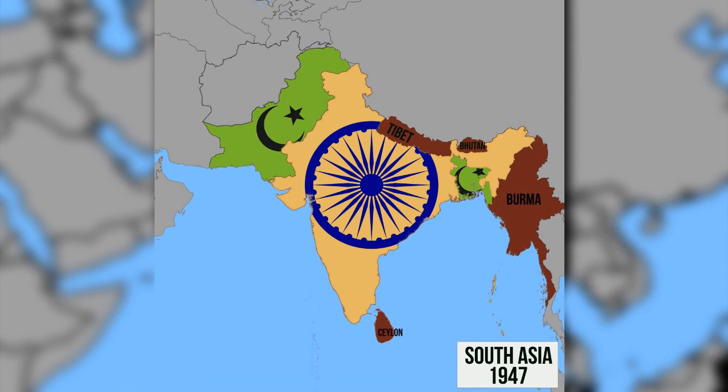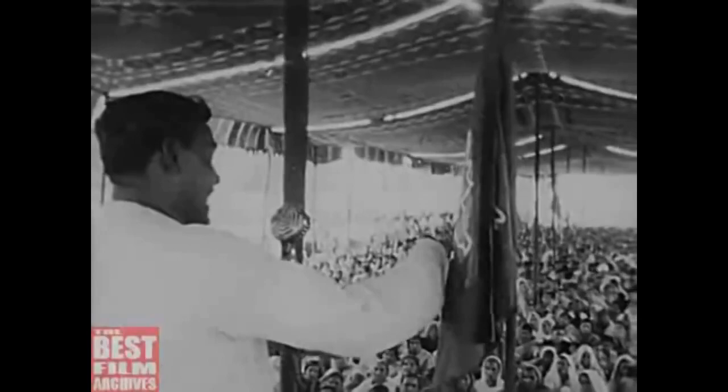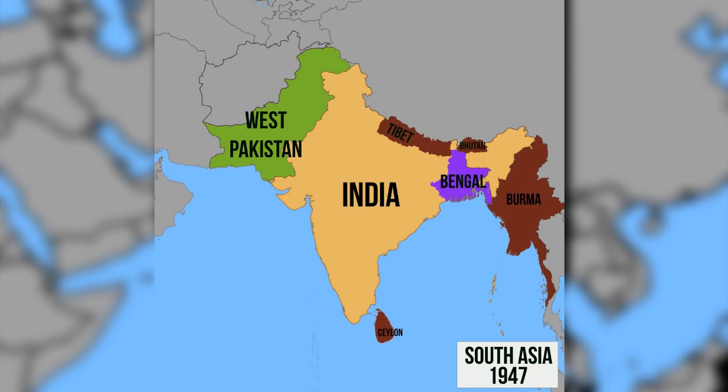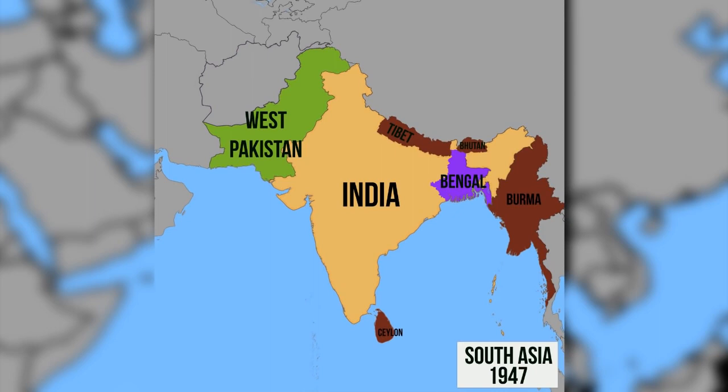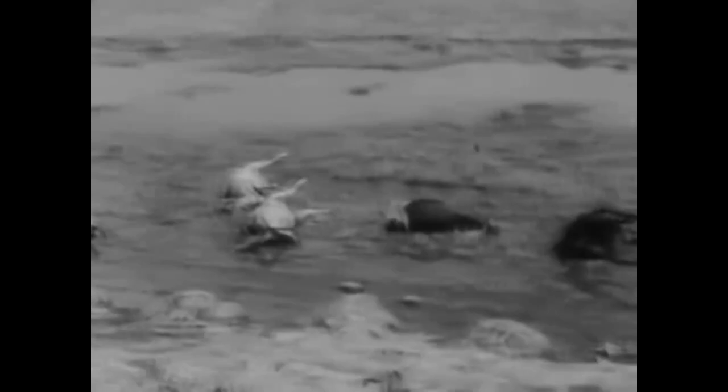This division was based on the two-nation theory — the idea that the nations of the Indian subcontinent were based on religion rather than language or ethnicity. This resulted in the separation of the Bengali people, who lived in the area of Bengal, into the Indian state of West Bengal and the Pakistani province of East Bengal, later renamed to East Pakistan.